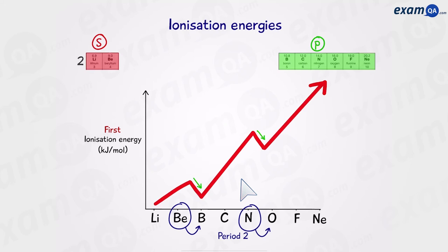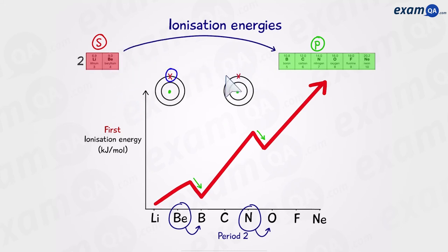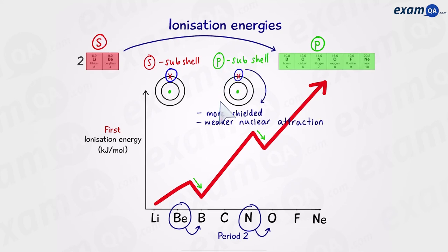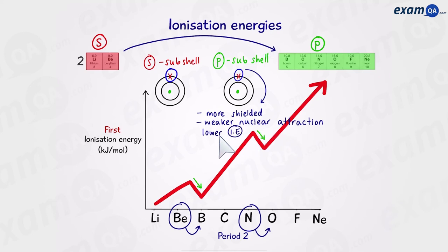Starting with beryllium and boron. When we go from beryllium to boron, the outermost electron in beryllium is in an S subshell, whereas the outermost electron in boron is in a P subshell. Electrons in the P subshell are in a higher state of energy, or we can say they experience more shielding, which means they have a weaker nuclear attraction and therefore a lower ionization energy. So in the diagram, boron should be higher than beryllium, but actually it's lower.